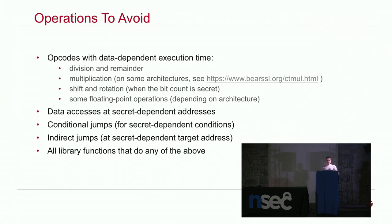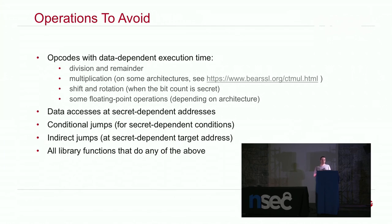You must absolutely avoid data accesses at secret-dependent addresses, which was an issue with classic AES table-based implementations. A variant is that you must not do a conditional jump that depends on secret data, because executing a conditional jump accesses some code bytes or others depending on the jump condition. Similarly, indirect jumps should not go to a secret-dependent target address. And of course, any library function which uses either of these operations should be avoided — you must be very careful about what you call.